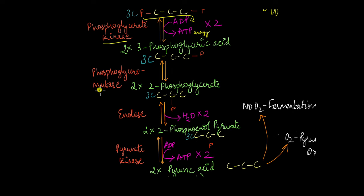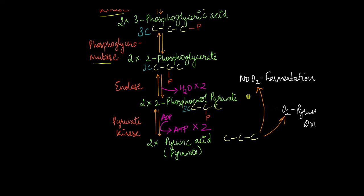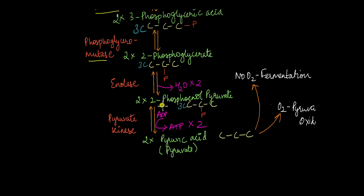The enzyme phosphoglyceromutase converts 3-phosphoglyceric acid to 2-phosphoglycerate. What essentially happens is the position of the phosphate group is changed — initially attached to the third carbon, it is moved to the second carbon. So from two molecules of 3-phosphoglyceric acid, two molecules of 2-phosphoglycerate are formed. 2-phosphoglycerate is then converted to two molecules of phosphoenolpyruvate (PEP) with the help of the enzyme enolase, which is also known as a hydratase enzyme, and two molecules of water are also released in this step.